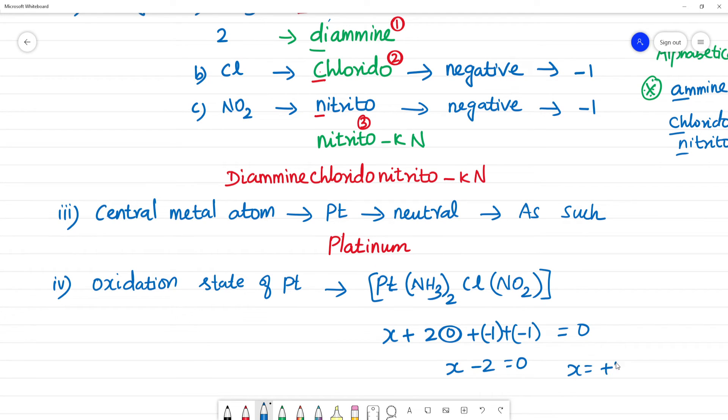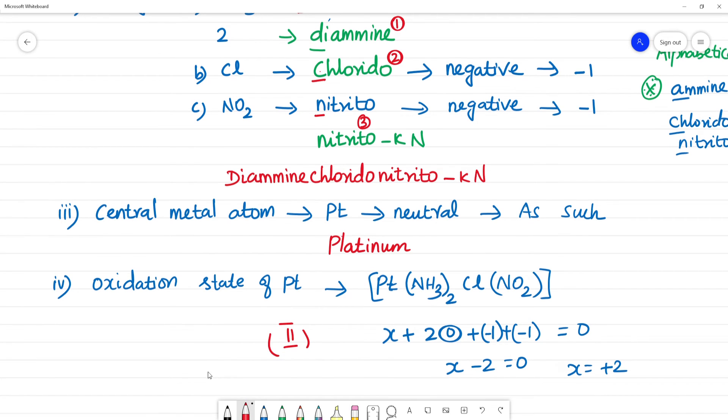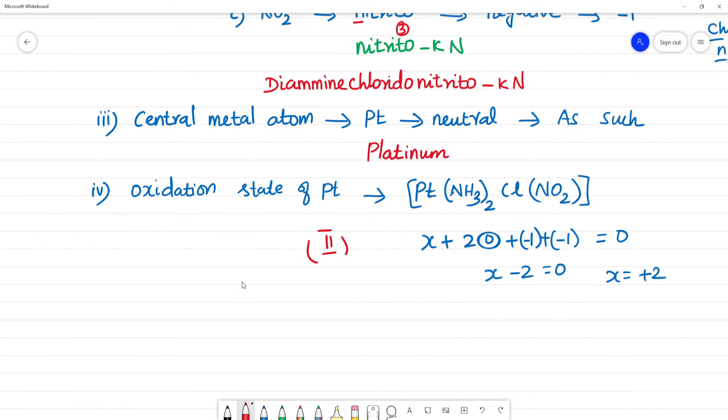The total name, full name: diamine chlorido nitrito, linkage is with nitrogen, platinum, and the oxidation state is 2.